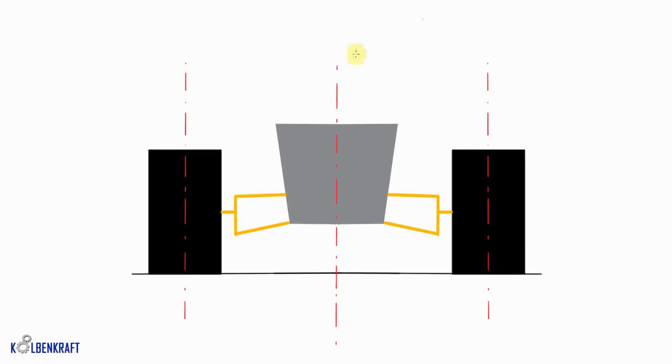So this all depends on the suspension geometry. Here we have a two-dimensional front view of a vehicle. We have the tires, the suspension arms, and the vehicle frame.